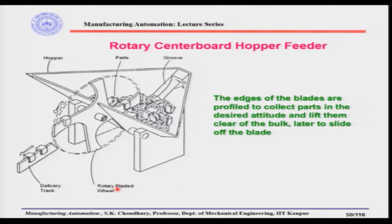Hello and welcome back to the manufacturing automation course. Last time we discussed the rotary centerboard hopper feeder. In that design, there is a hopper and the edges of the blades which rotate within the mass of the parts located at the base of the hopper. The blades are profiled to collect parts in the desired attitude and lift them clear of the bulk, later to slide off the blade.